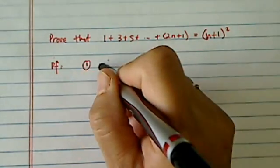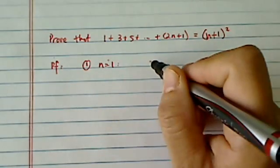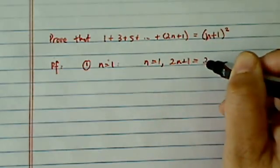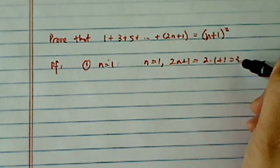Basically, number one, we're going to test when n equals 1. So when n equals 1, 2n plus 1 is equal to 2 times 1 plus 1, which equals 3.